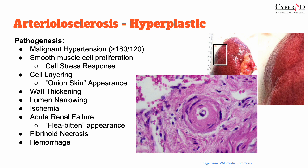What they're describing with a flea-bitten appearance is all these little dots or specks on the surface of the kidney as viewed grossly, such as during autopsy. In addition, the extreme stress on the cells can lead to necrosis — specifically fibrinoid necrosis — which may subsequently result in hemorrhage.